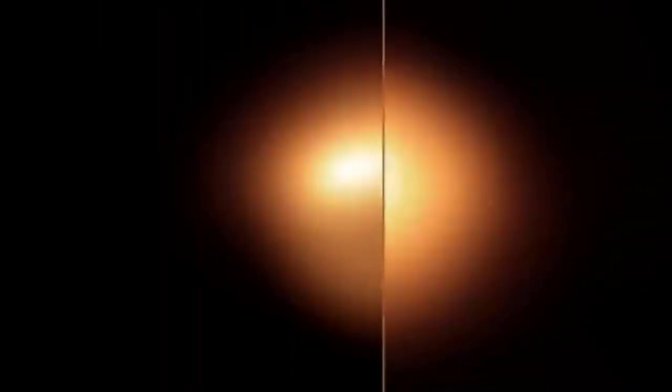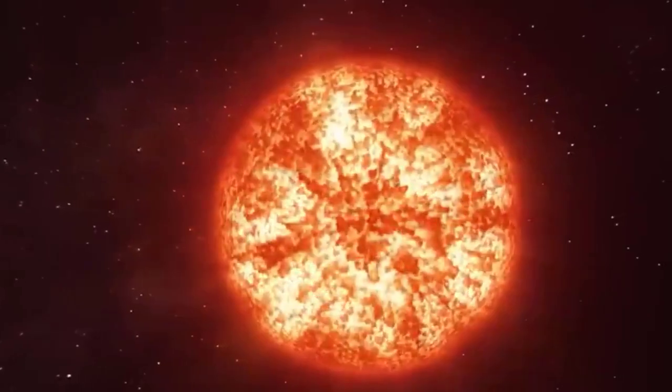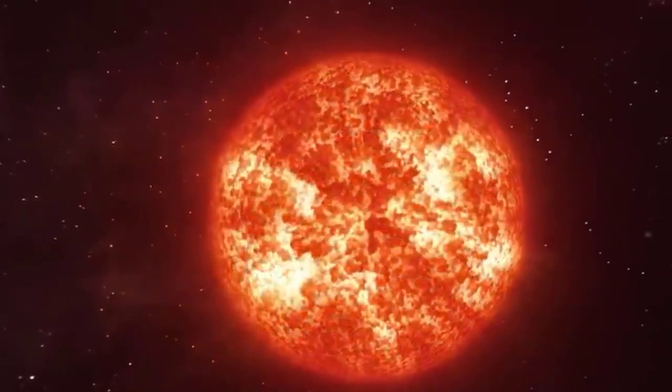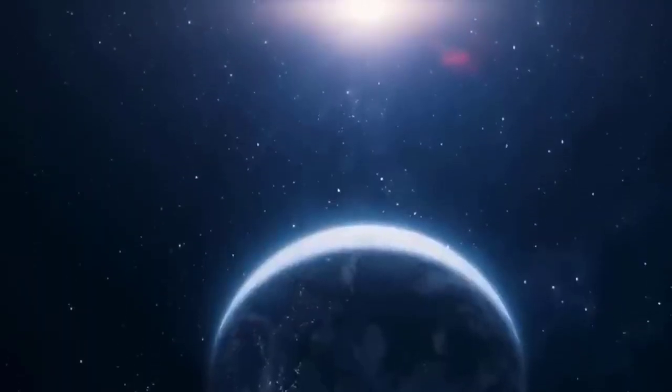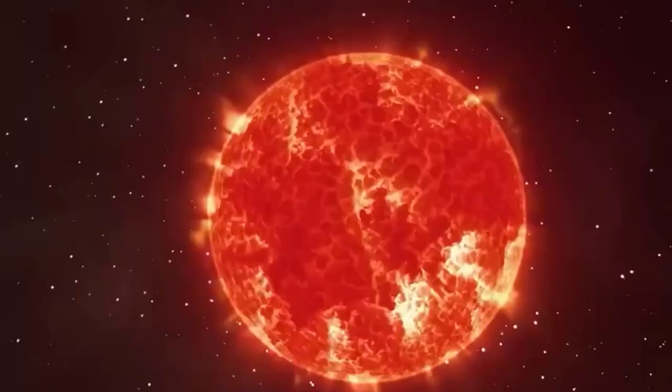During the autumn of 2019, Betelgeuse significantly decreased luminosity, deviating from its usual pattern of brightening and fading. In a matter of months, the star dimmed by approximately 60%, marking an occurrence now recognized as the Great Dimming. This event made the star 2.5 times fainter than any previous observations. The cause was later determined to be a massive ejection of material from the star's interior, forming an extensive dust cloud obscuring our direct view.